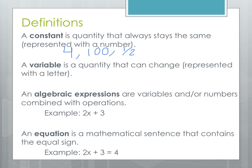A variable, however, is a quantity that can change, and it's usually represented with a letter. We might use X or Y, or maybe a capital T or a lowercase t — there's a difference between a capitalized letter and a lowercase letter. Sometimes we use Greek letters like alpha and so on. We will see pi later on, but pi is going to be a constant for us.